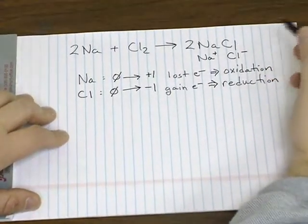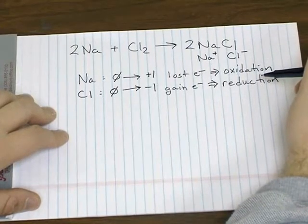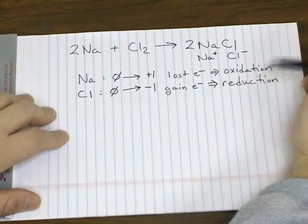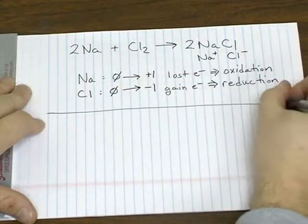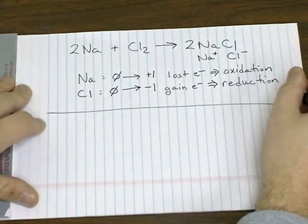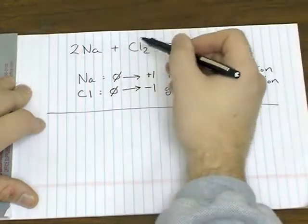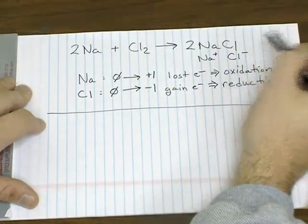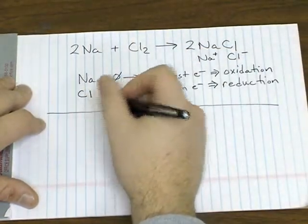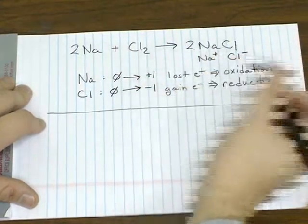So this is what we call an oxidation-reduction or redox reaction for short. They are very common types of reactions and are not limited to cases where you have a metal and a non-metal forming an ionic compound. In fact, there doesn't have to be ions involved at all.